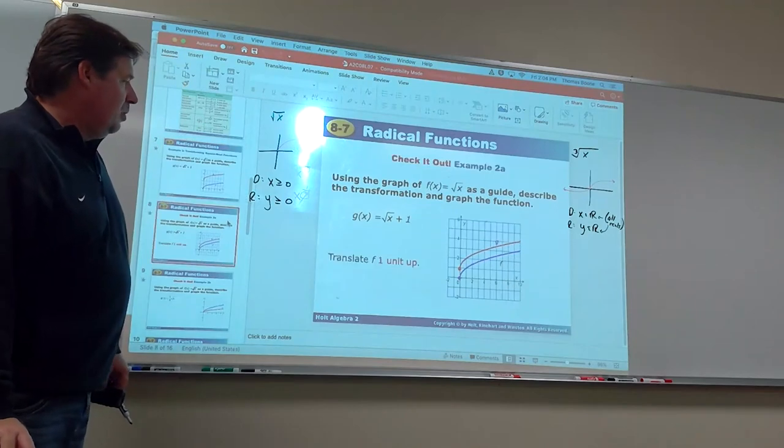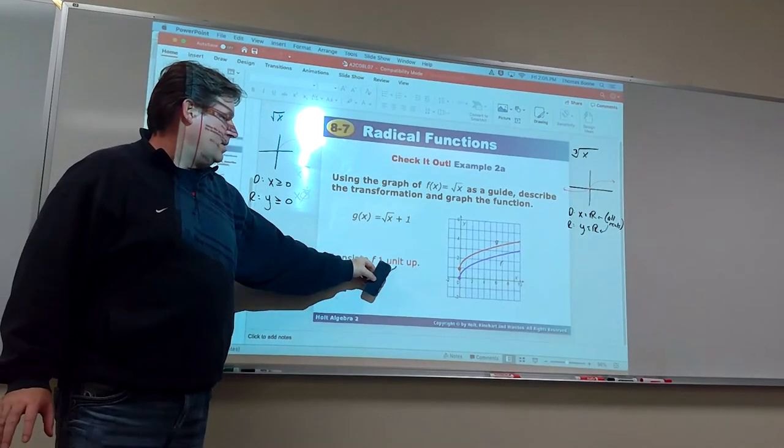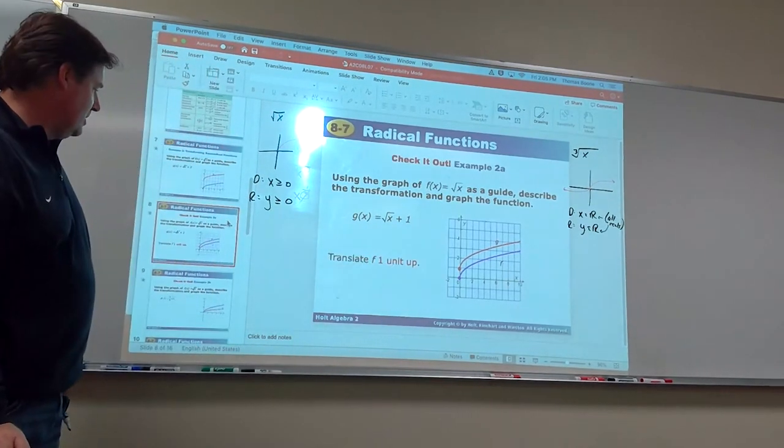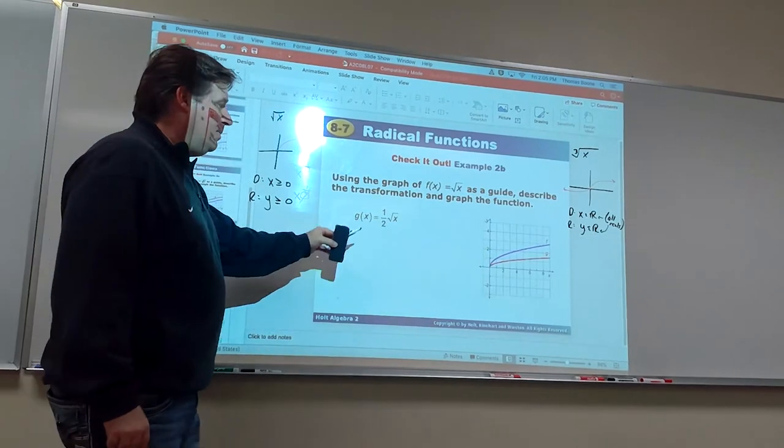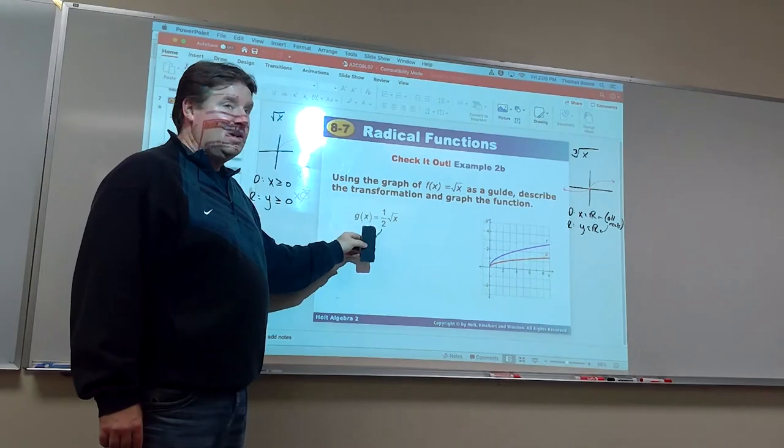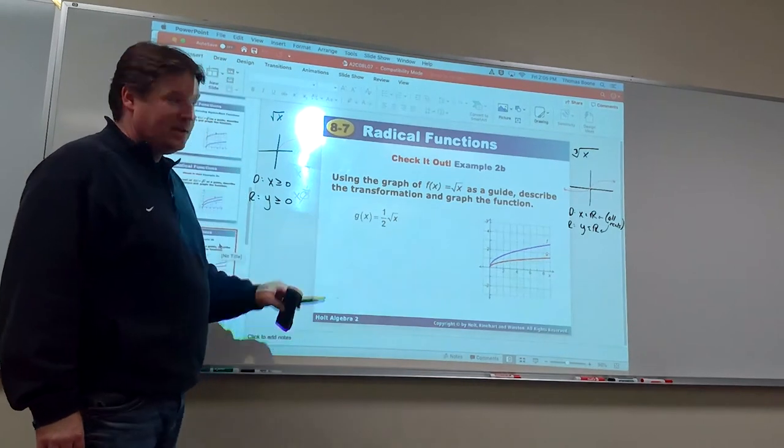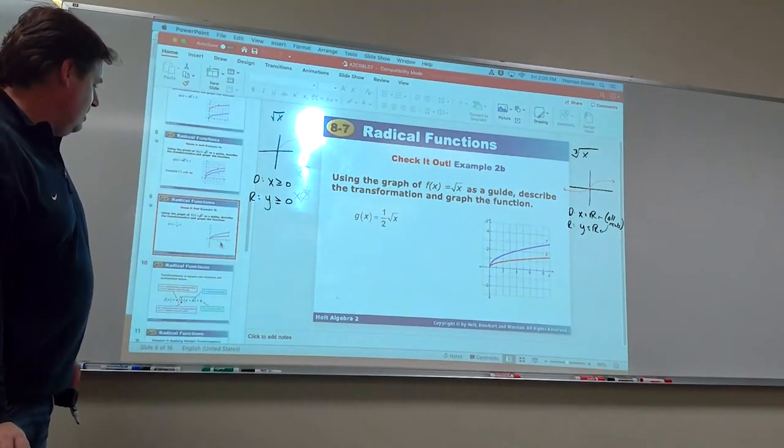All right. And then here, well, if we go plus 1, that's going to move it up 1. We know that. We can see that. All right. Now, what's this one going to do? Now, if we multiply out in front by 1 half, remember, that's a vertical compression. Vertical compression is what that does. Squeezes it down. That's what happens.